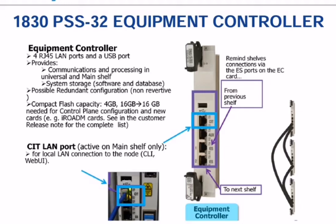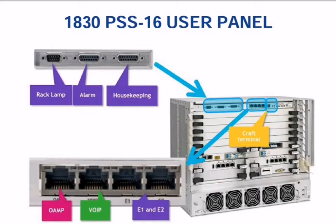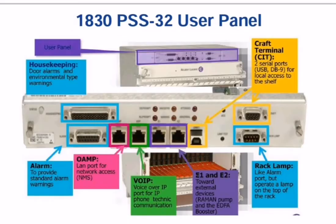This RJ45 provides communication between the universal shelf and the main shelf. I will show you this in the next slide — the complete structure of the DWDM. This is the universal shelf and we connect it with the main shelf so that they can both communicate with each other. The next section covers the complete ports for the user interface channel.